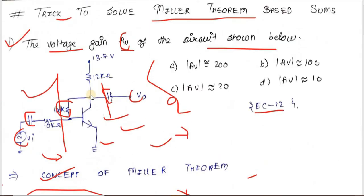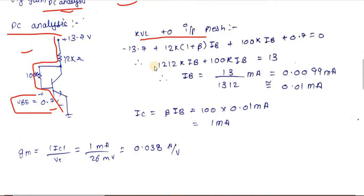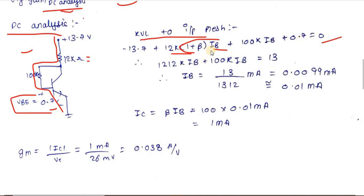We can write Ib + Ic = (1 + β)×Ib = Ie. With β = 100, the equation becomes: 12k×101×Ib + 100k×Ib = 13, which simplifies to 1212k×Ib + 100k×Ib = 13.